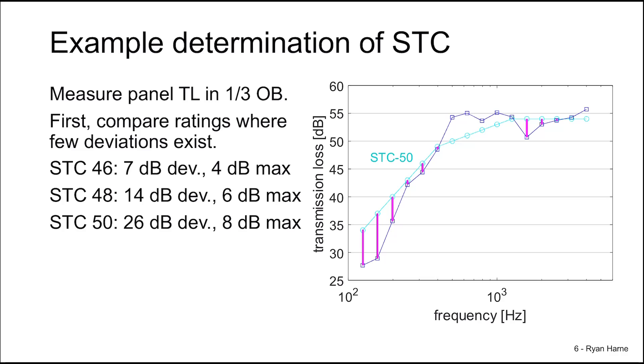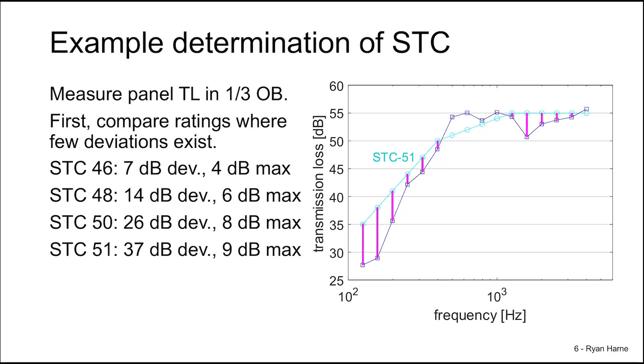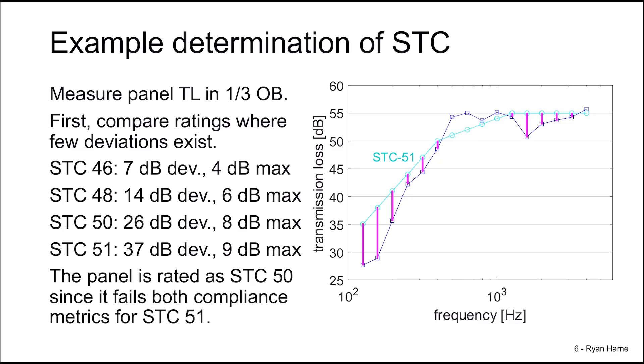Let's move up one more just to see what happens. STC 51, lots of deviations now. The total deviation is 37 decibels and the maximum is nine. So the STC rating for the panel is STC 50 because it has now failed in this case both compliance metrics for STC 51.